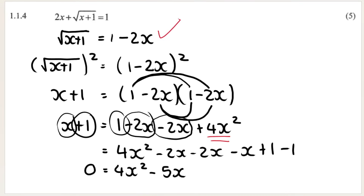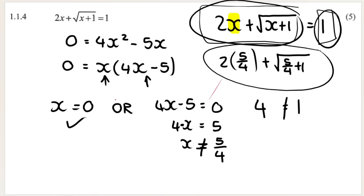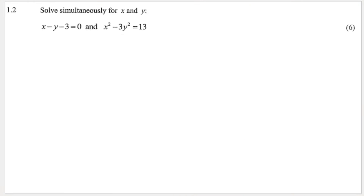For marks: you get a mark for isolating the root, a mark for squaring both sides and showing it on paper, a mark for putting it into standard form, a mark for giving the two solutions, and a mark for showing that you are rejecting the invalid solution.